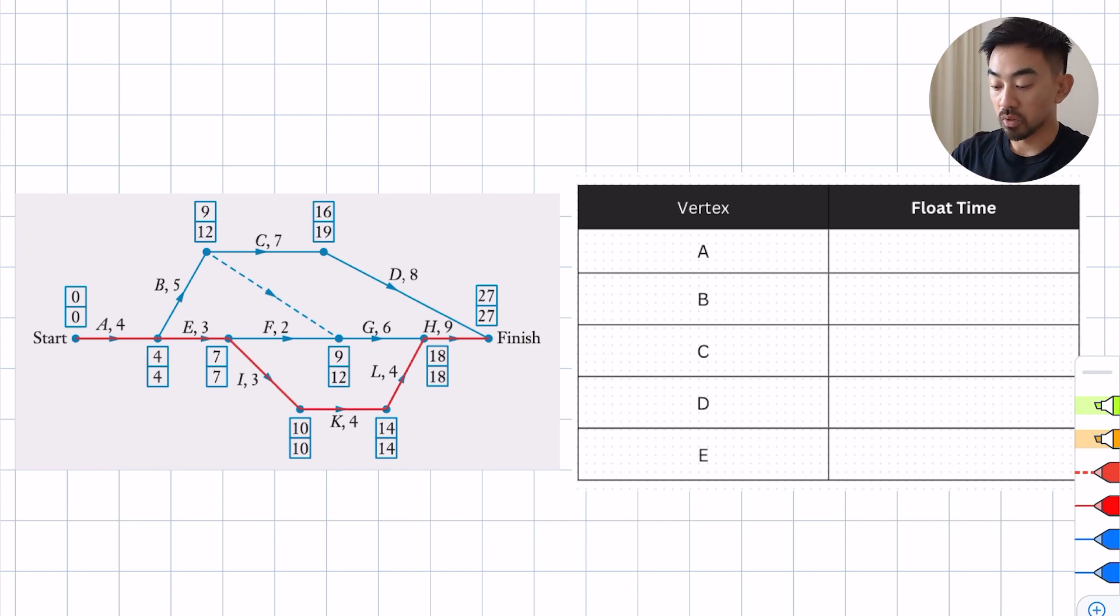For example, you can see on the left hand side I've got a network which has got its forward scan, backward scan, and we're going to find the float times for these vertices. So float time basically, well the formula to find it, is the latest start time of the next minus the early start time of the previous minus the activity time.